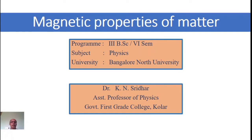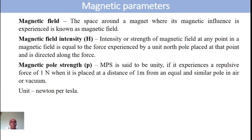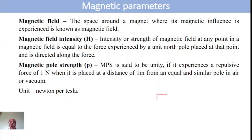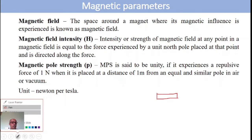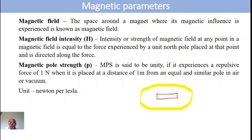Good morning. Let us today study the Magnetic Properties of Matter. Coming to the Magnetic Properties, we study a few concepts related to magnetism. Number one is Magnetic Field. Magnetic Field is defined as the space around the magnet — where any other magnetic material will experience a force. If it enters into this region, it will experience a force, and that region around the magnet is called the magnetic field.